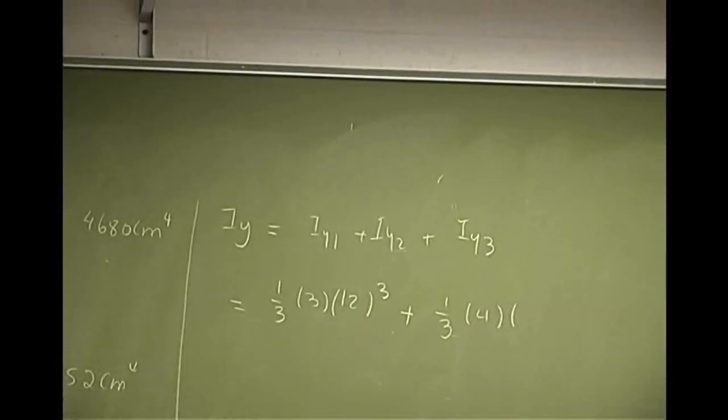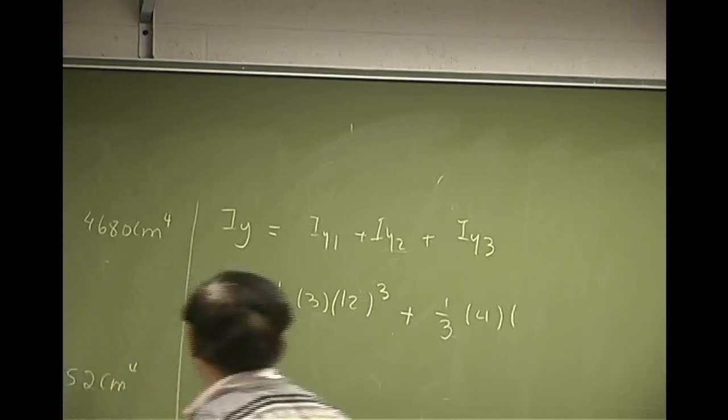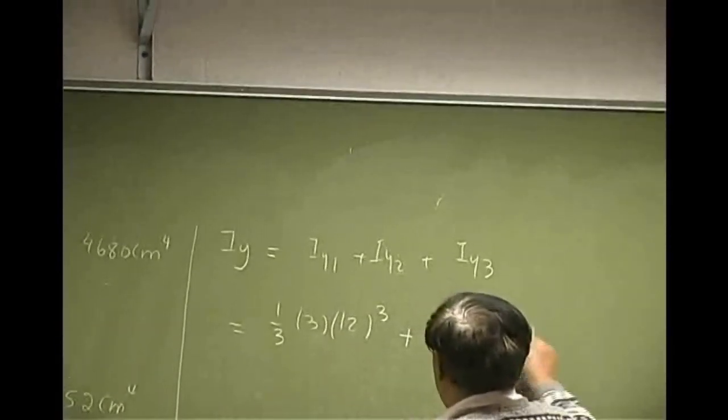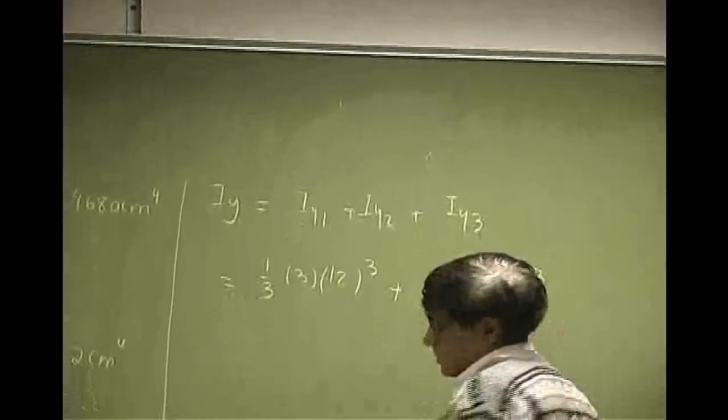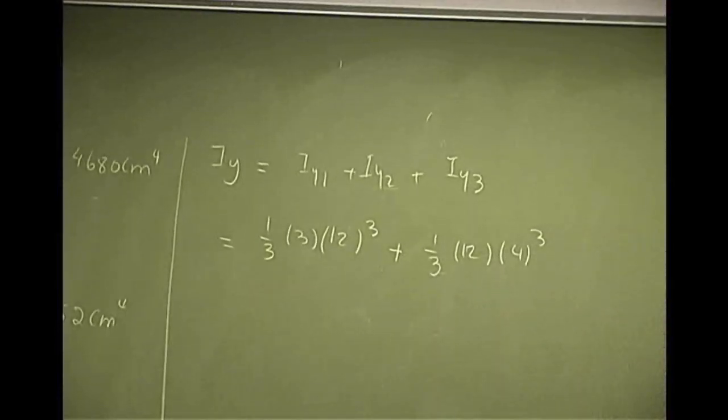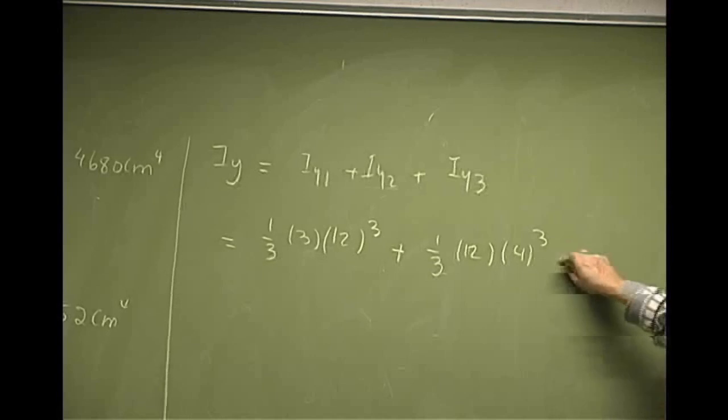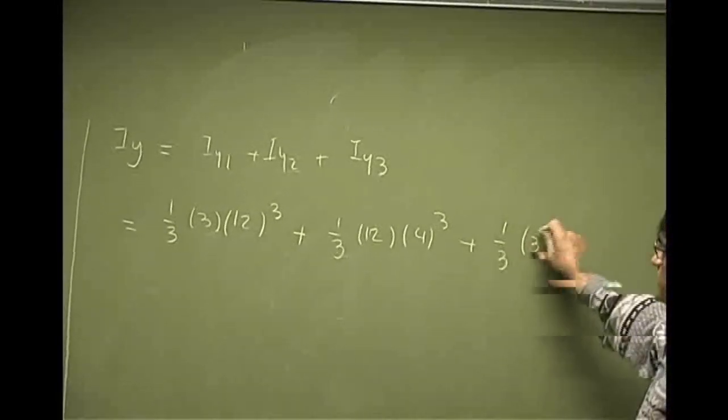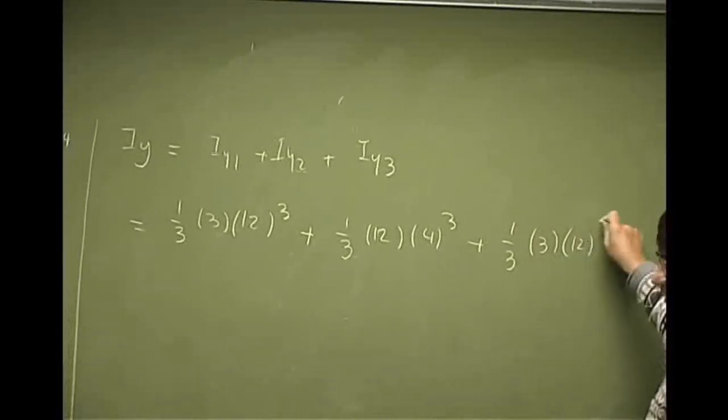We're looking at this, so that's B, that should be 12, and you should have 4 as Q. The last one is the same as the first one, so you get 1/3(3)(12)³.